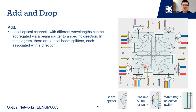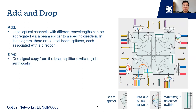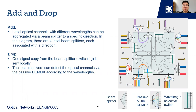For the add function, local optical signals with different wavelengths can be combined by a beam splitter and sent to a specific direction. As the ROADM shown here is a four-degree node, there are four local beam splitters, each associated with a direction — south, west, north, and east. For example, it can combine local optical signals of orange and blue and send them to the south direction. For the drop function, it works the opposite way. A copy of the optical signal is sent to local receivers, which can detect optical channels via the passive demux according to assigned wavelengths, as shown by the purple signal.